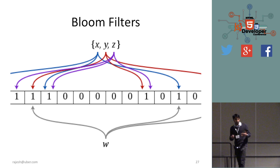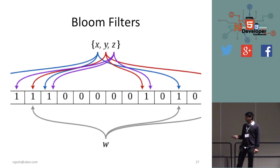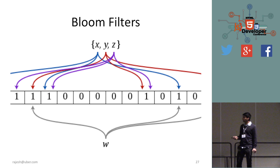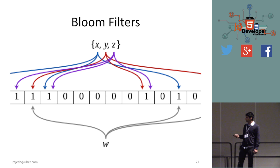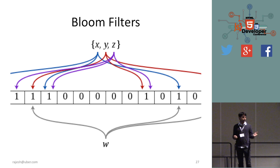The next data structure is a bloom filter — a probabilistic data structure. Its advantage is it uses very little memory. The disadvantage is false positives: it can say yes to something that's not actually there. It works by having three hashing functions. To insert x, you call all three hashing functions and set those positions in an array to 1. Because there can be collisions between x and y, it may incorrectly say an element is present. But it uses really less memory and sometimes false positives are acceptable.